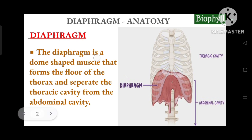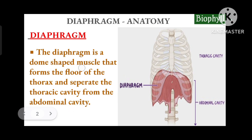The diaphragm is a dome-shaped muscle. It is a muscle that forms the floor of the thorax and separates the thoracic cavity from the abdominal cavity.